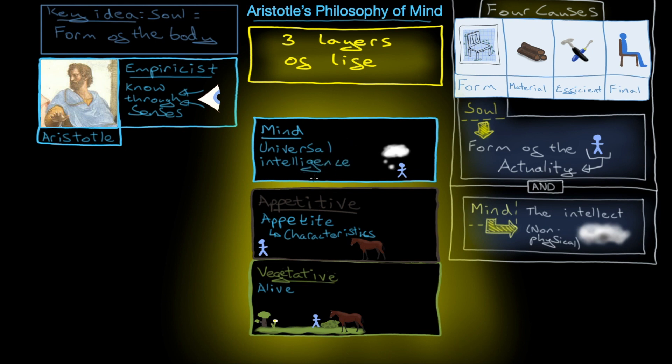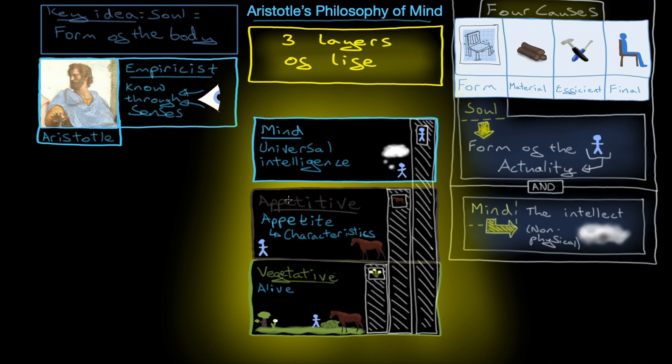It's non-physical because it accesses the actuality, the final cause of the universe, and the final cause is also non-physical. But it's also universal for a very particular reason: it's universal because logic is the same everywhere. Some things have all the different kinds of soul and the mind, like humans do, and other things just have a bit. Plants just have the vegetative soul, animals have the vegetative and appetitive soul, and then humans have the vegetative soul, the appetitive soul, and the mind.